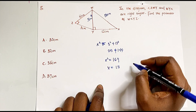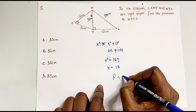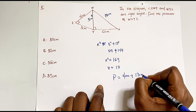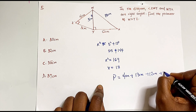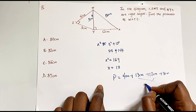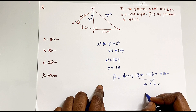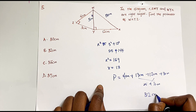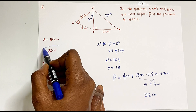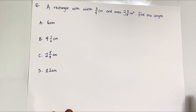Now we add all four sides: perimeter = 4 + 13 + 12 + 3. Four plus three is seven, thirteen plus twelve is twenty-five, and seven plus twenty-five is 32 cm. That's option B — 32 cm is the perimeter of this shape.